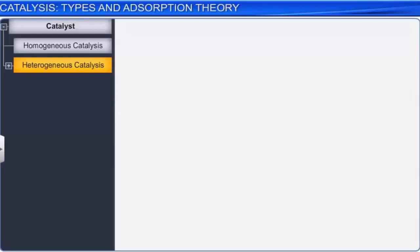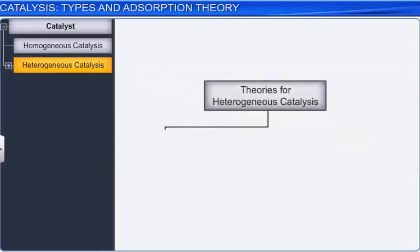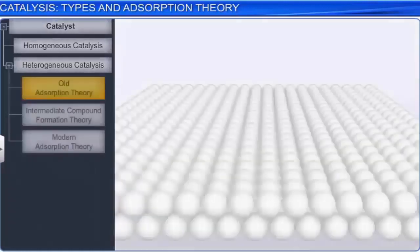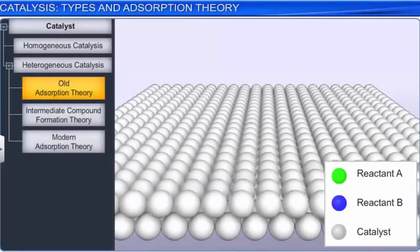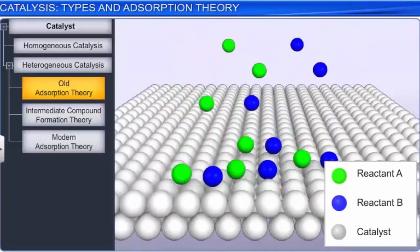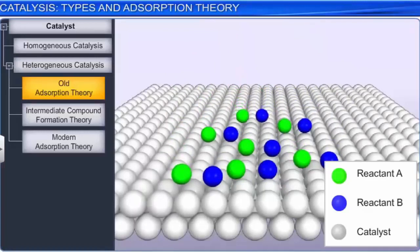Diverse mechanisms of heterogeneous catalysis are known. We will discuss three theories: the old adsorption theory, the intermediate compound formation theory, and the modern adsorption theory. According to the old adsorption theory, reactants in the gaseous or solution phase are adsorbed at the active sites on the surface of the catalyst, resulting in an increase in the concentration of reactant molecules on the surface and thus increasing the rate of reaction. The relative ease with which the product is separated from the catalyst helps a continuous chemical process to be initiated. Also, as adsorption is an exothermic process, the heat evolved in the reaction helps to speed it up.